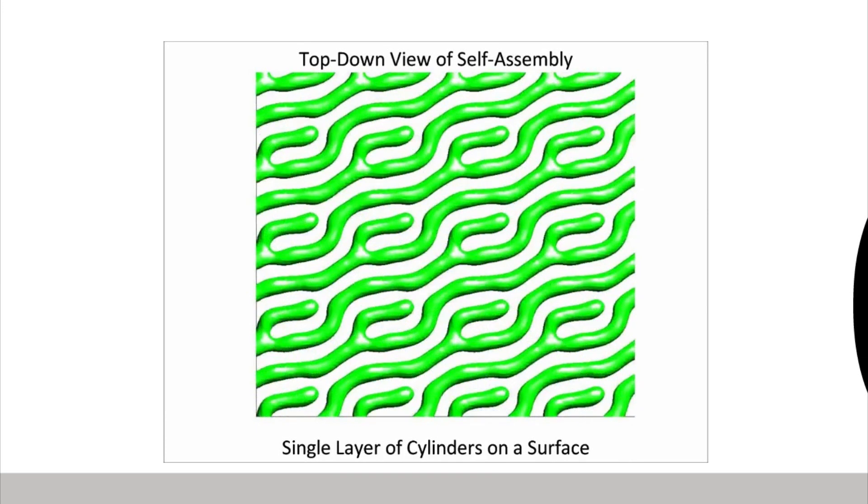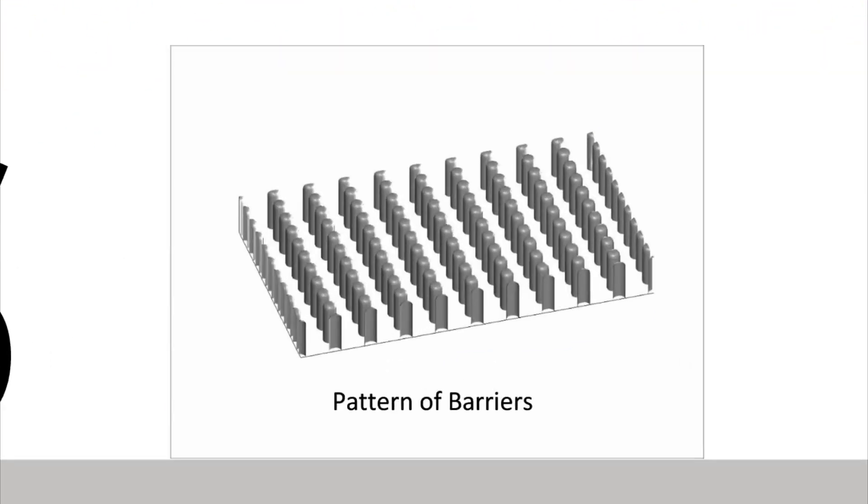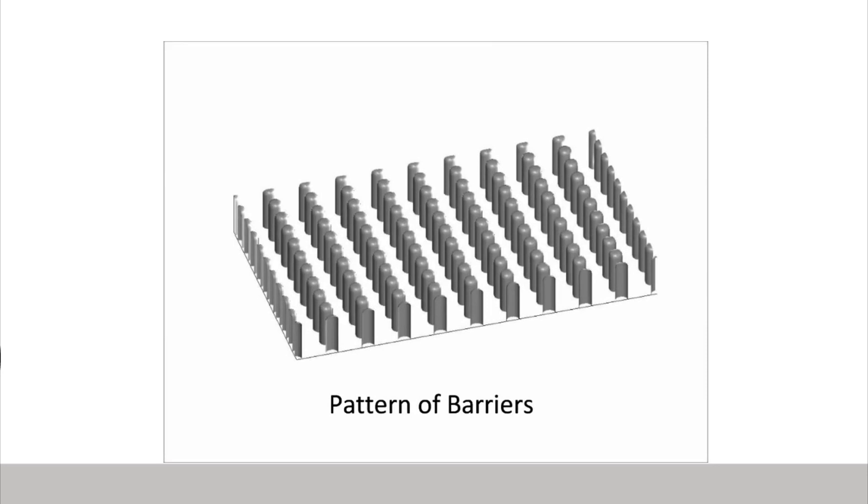Recently, we have discovered strategies for controlling their behavior in three dimensions. Here's how we do it. We use barriers, which are made of silica-like materials, and which are used to order the cylinders as they form.